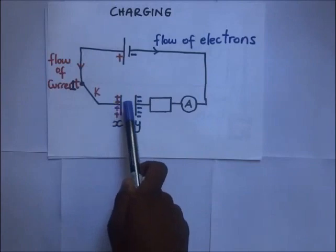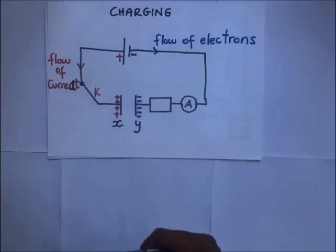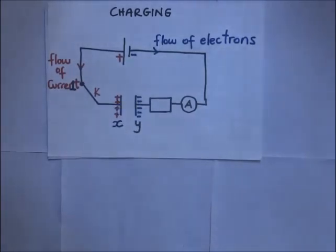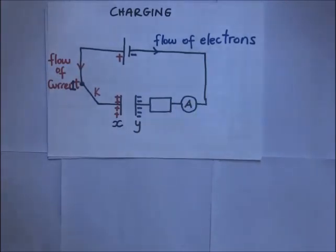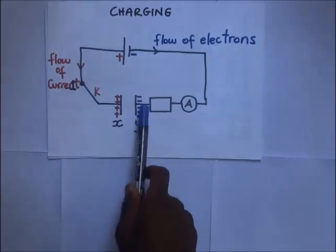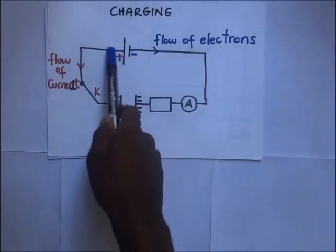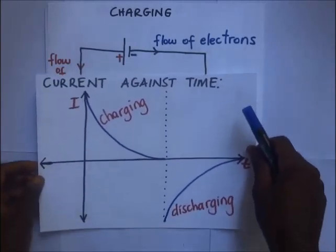As charges accumulate on the plates, the potential difference across them starts increasing. As the PD increases, the amount of current flowing through the ammeter starts decreasing. When the PD across the capacitor plates equals the PD across the cell, the capacitor is fully charged and the flow of electrons ceases. This is shown on our graph of current against time.